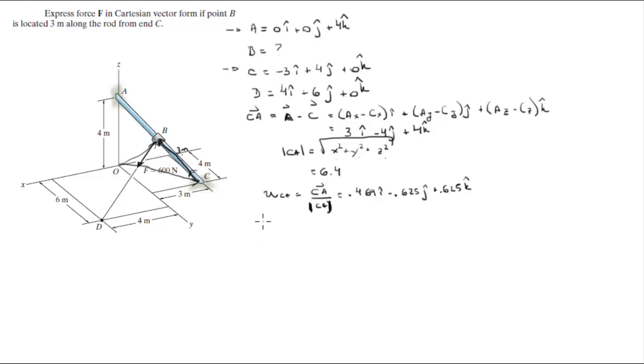Now that we got this unit vector, we can find the vector CB because we know that the magnitude of CB is given to us at 3 meters. The CB vector is gonna be equal to the magnitude times the unit vector going through it. So you're gonna multiply this unit vector by this value and you're gonna get that CB is equal to 1.407i minus 1.875j plus 1.875k. Now we got vector CB.